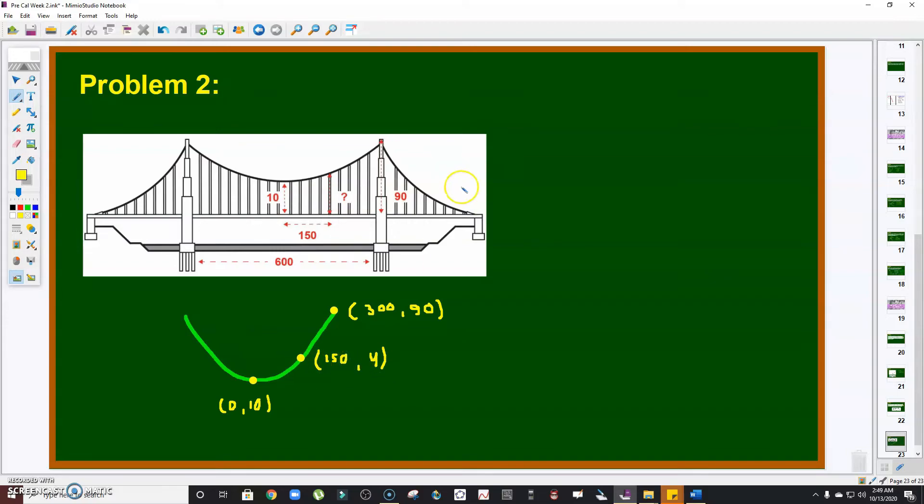How are we going to do that? Since the parabola opens upward, we are going to use (x - h)² = 4c(y - k). Again, positive 4c because the parabola opens upward. The vertex is (0, 10), so what I'm going to have here is x² = 4c(y - 10).